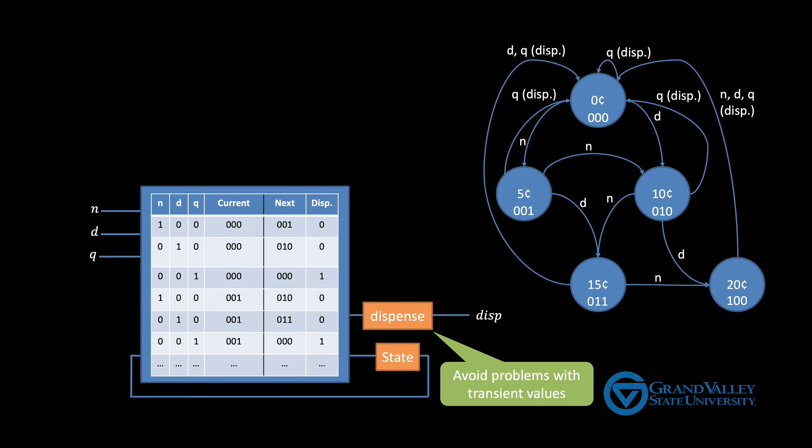We also add this register to that dispense output to prevent transient values from that combinatorial circuit from causing the newspaper to get dispensed too early. By adding the register, that final dispense signal will only reach the device that opens the lock at the end of the clock cycle after enough time has passed to ensure that the final value has been reached. In other words, this register ensures that a temporary transient change from a zero to a one on that wire doesn't cause the newspaper to get dispensed. It only gets dispensed if that one is still there at the end of the clock cycle when the register is allowed to take on a new value.